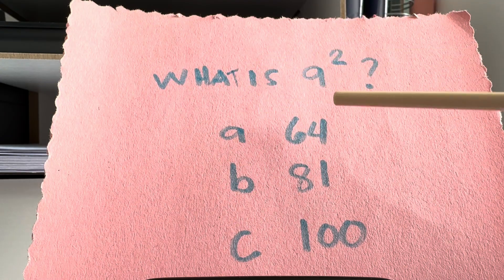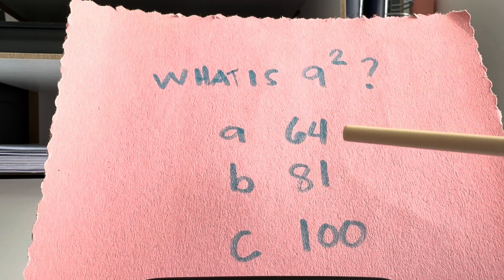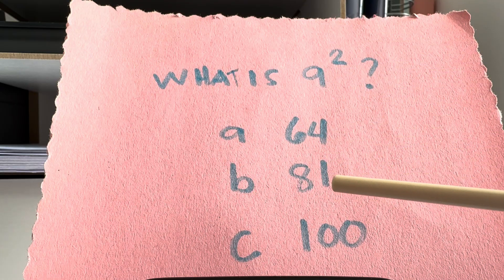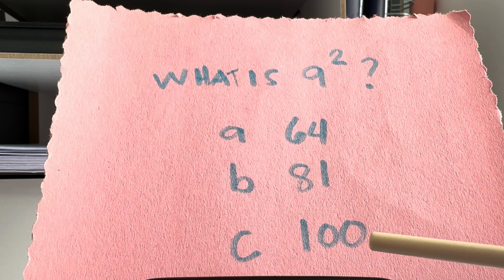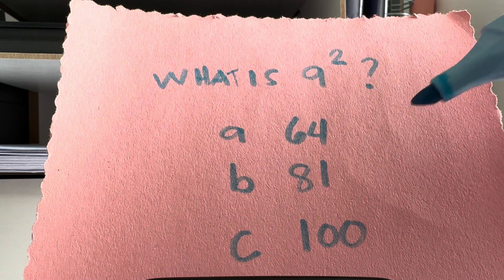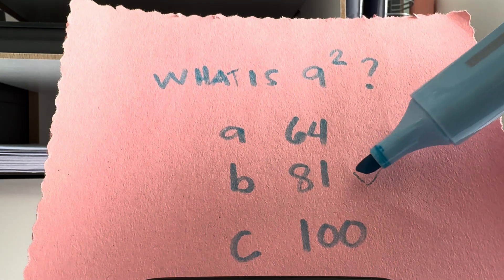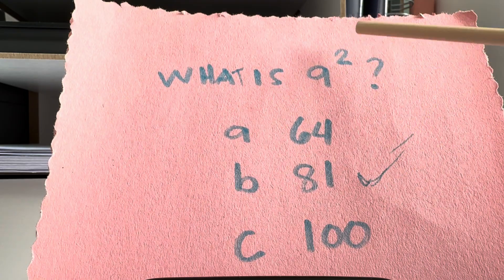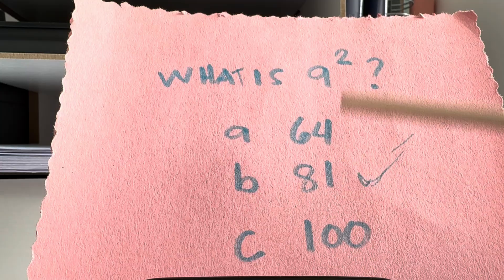What is 9 squared? If your answer is letter B, then you are right. 9 squared is equal to 81.